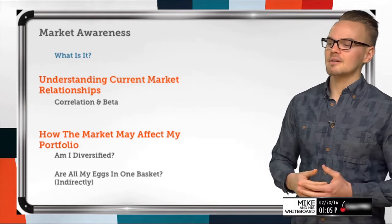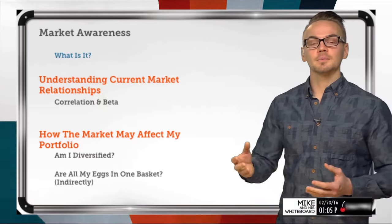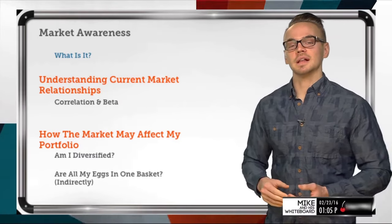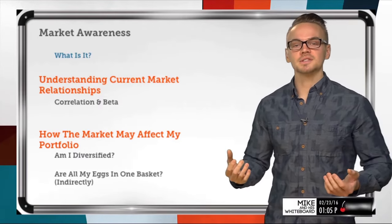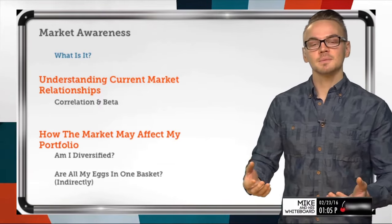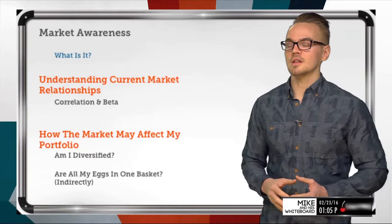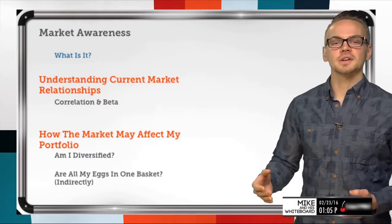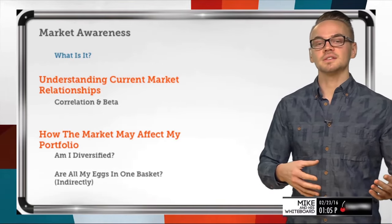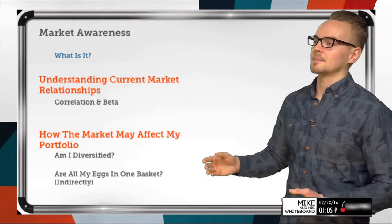We need to understand if all our eggs are in one basket, perhaps indirectly. For example, if I'm comfortable selling puts and I sell a put in Google, a put in Apple, and a put in SPY, I might not realize all three have a very strong correlation — I'm just tripling down on the same assumption. So we need to look at correlation to get ourselves into a more uncorrelated, balanced situation.